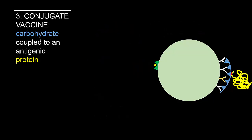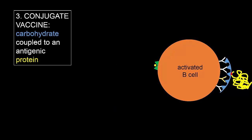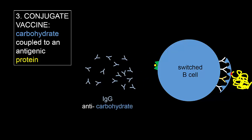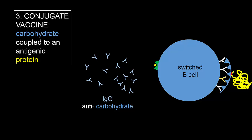The follicular helper T cell sends switch signals through CD40. The activated B cell first secretes IgM anti-carbohydrate and, because of the T cell help, then switches to secreting IgG. By coupling a protein to the carbohydrate, we make the B cell able to do something it could not have done on its own.